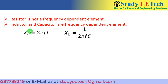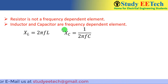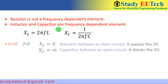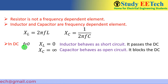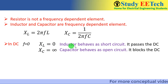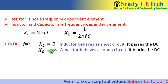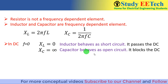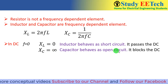What is the behavior of XL and XC if a DC signal is applied? In the case of DC the frequency is zero, so putting zero into the formulas: XL = 0 and XC = infinity. This means XL provides zero impedance to the DC signal — it passes DC and the inductor behaves as a short circuit. The capacitor offers infinite impedance — it blocks DC and behaves as an open circuit.